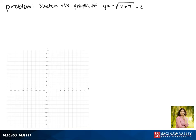Today we'll be graphing the function y equals the negative of the square root of x plus 7 minus 2. We'll start by looking at the graph of the parent function y equals the square root of x.